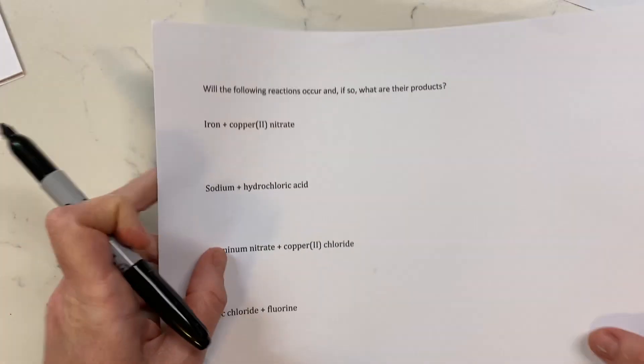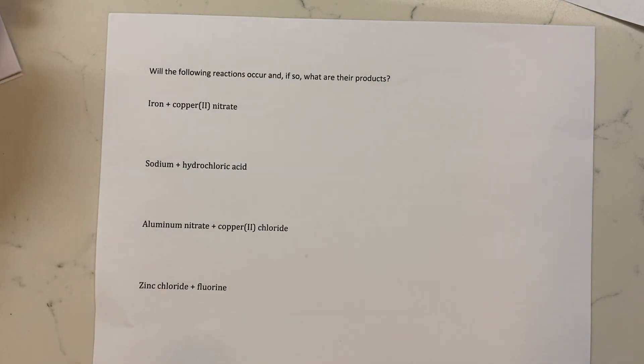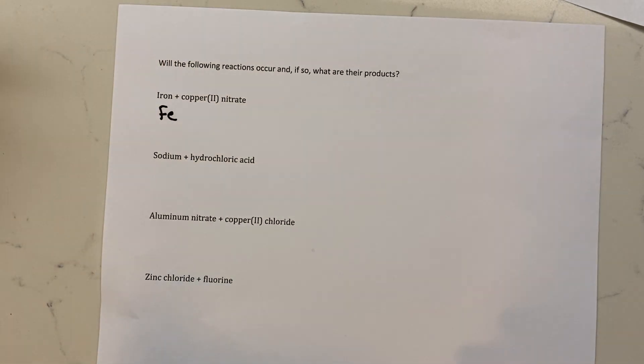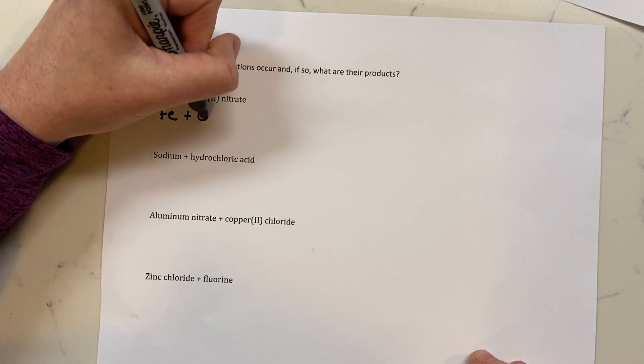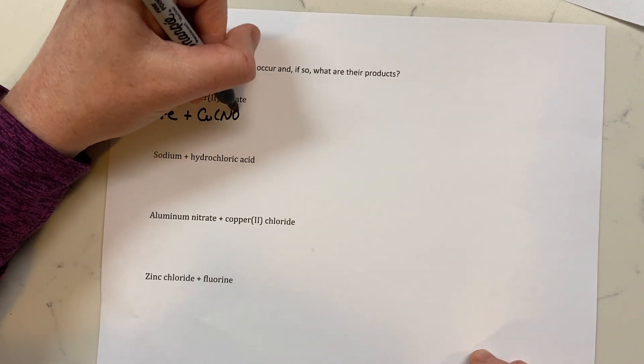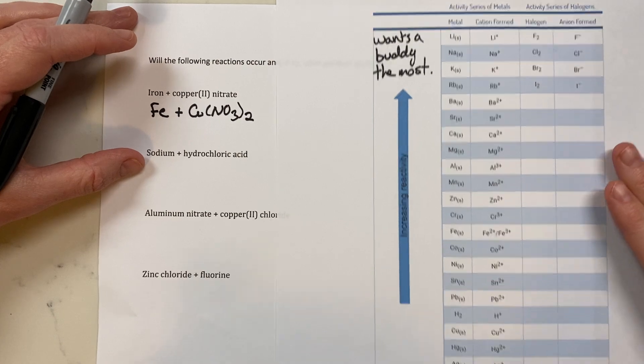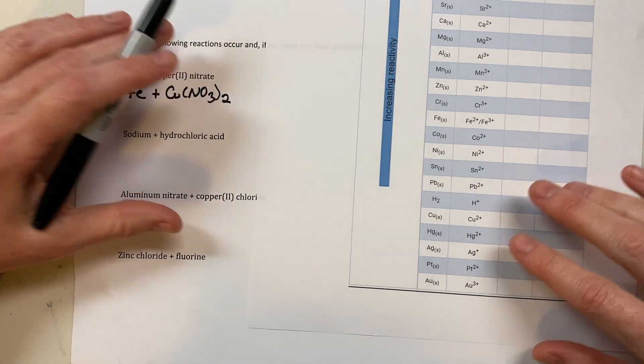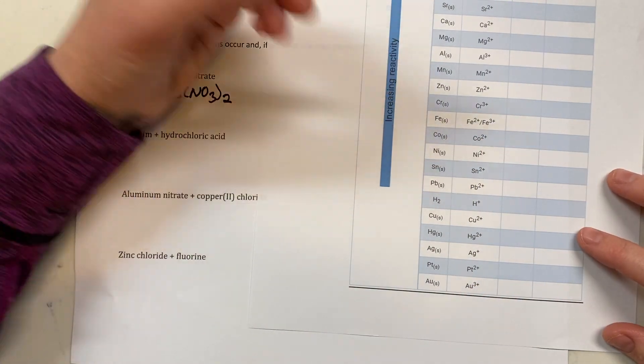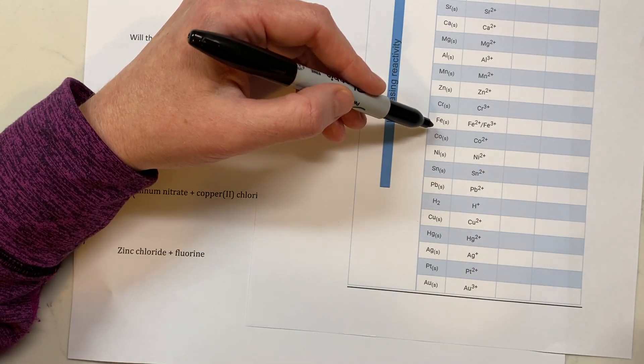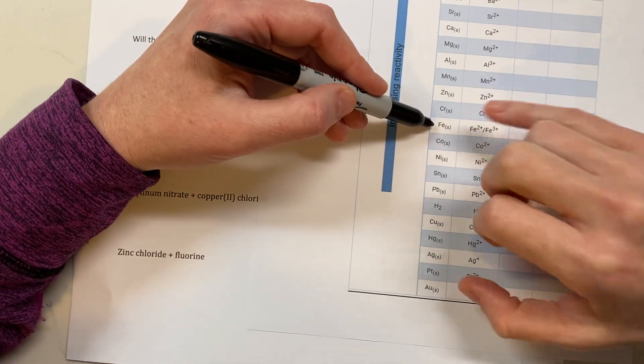Let's go ahead and use this information that the higher something is on a list, the more it wants a buddy, and see if we can figure out how that's going to play out in an actual example. Okay, so I ask, will the following reactions occur? And if so, what are the products? So I wrote them out so we can get really used to nomenclature and figuring out products really easily. So iron is Fe, it's talking about regular iron, not a charged iron or anything, and it's reacting with copper 2 nitrate.